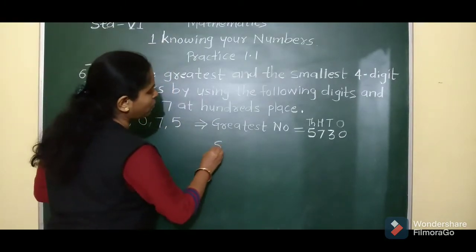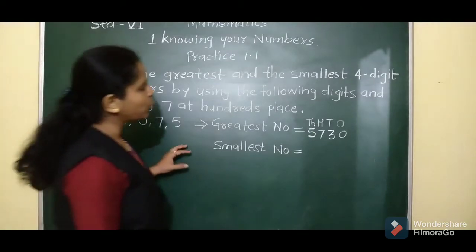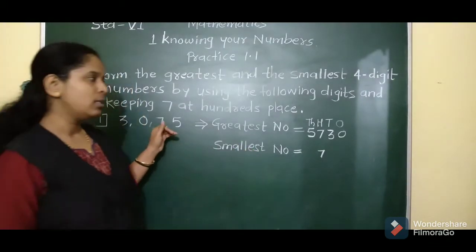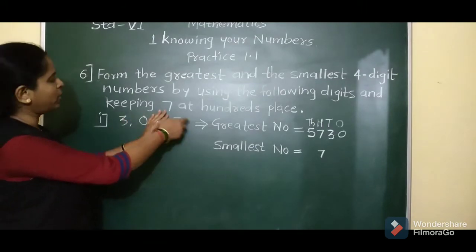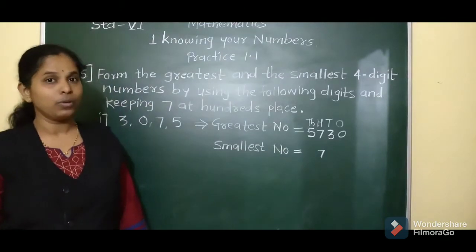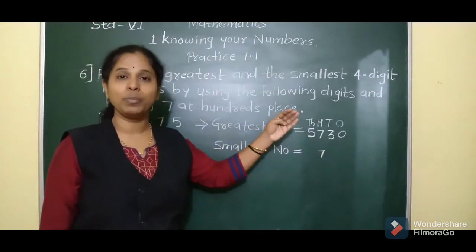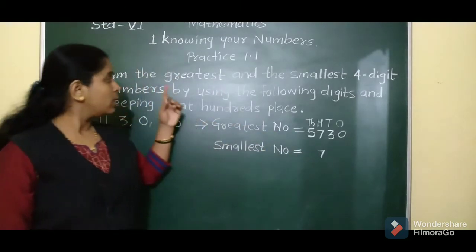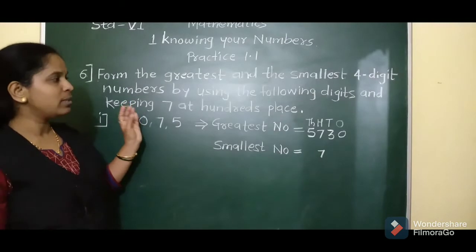Now we make the smallest number using the same digits with 7 fixed at the hundreds place. For the smallest number, we arrange digits in ascending order — the smallest digit first. Among 3, 0, and 5, the digit 0 is the smallest. But we cannot write 0 at the thousands place, because then it would not be a 4-digit number — it would become a 3-digit number, which the question does not ask for. So we skip 0 for now.